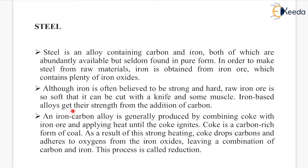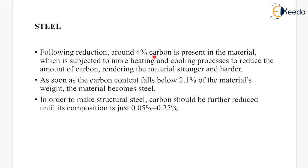Iron-based alloys get their strength from the addition of carbon. An iron-carbon alloy is generally produced by combining coke with iron ore and applying heat until the coke ignites. Coke is a carbon-rich form of coal. As a result of this strong heating, coke drops carbon and adheres to oxygen from the iron oxides, leaving a combination of carbon and iron. This process is called reduction. Following reduction, around 4% carbon is present in the material, which is then subjected to more heating and cooling processes to reduce the amount of carbon.